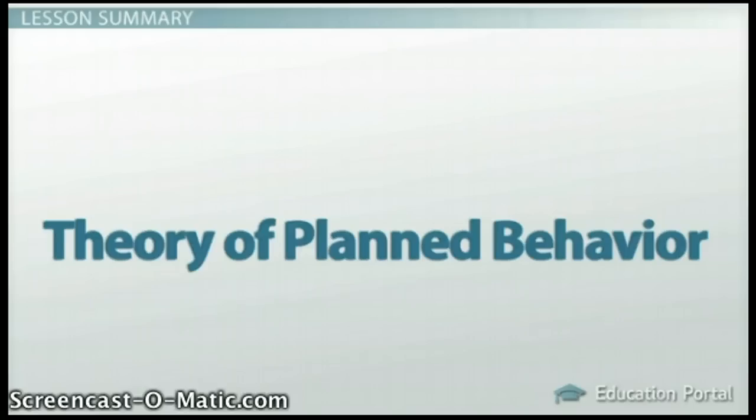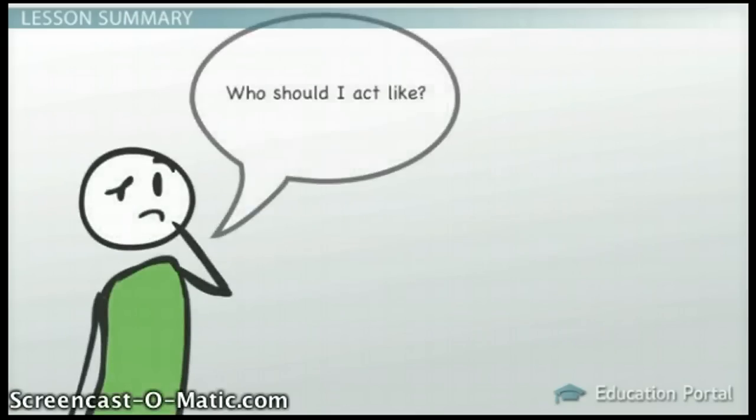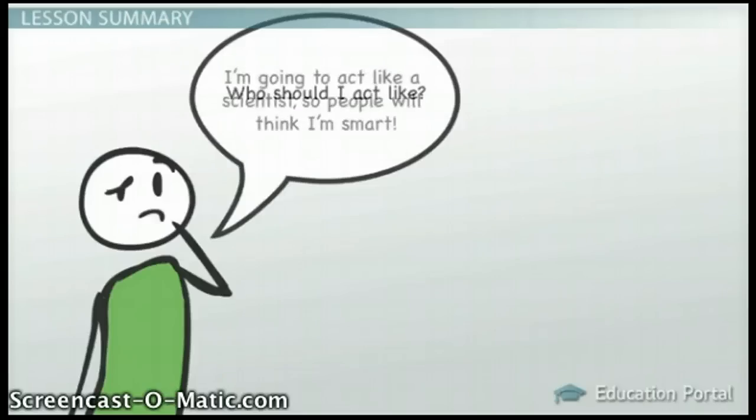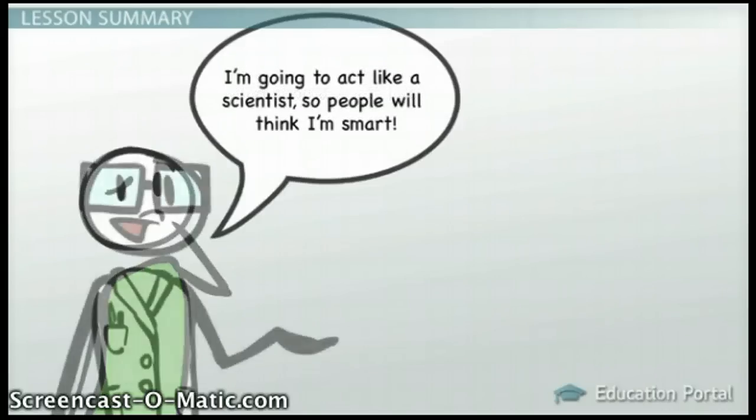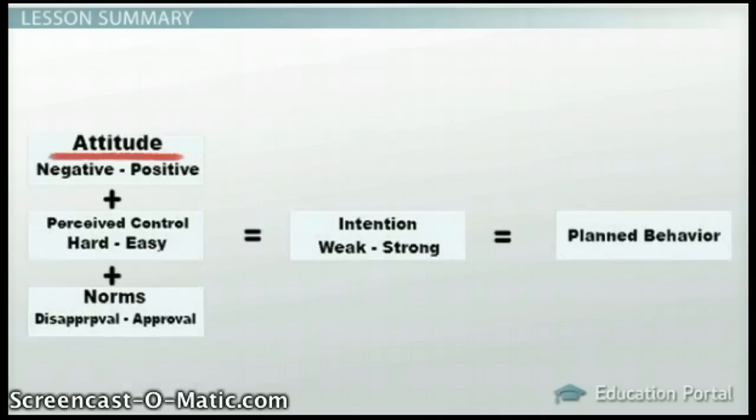In summary, the theory of planned behavior can be used to predict deliberate and planned behavior. According to this theory, when people have time to plan how they are going to behave, the best predictor of that behavior is one's intention. Intention is determined by three things: attitude, perceived control, and subjective norms.